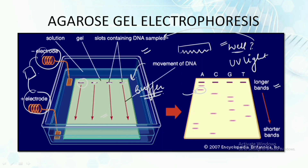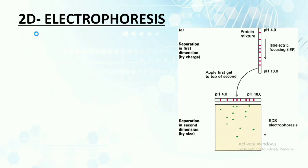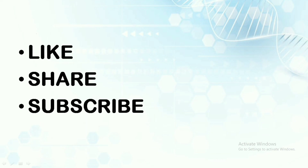The longer bands are present towards the well and the shorter bands are present towards the opposite end. This was all about agarose gel electrophoresis. I hope the basic principle of electrophoresis and the overview of agarose gel electrophoresis is clear to you, and that this video was helpful.